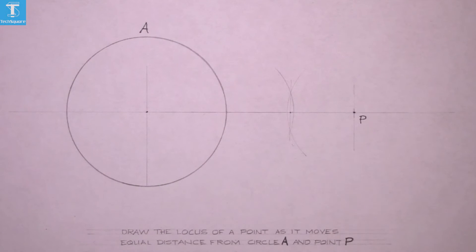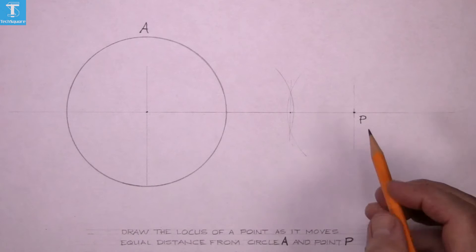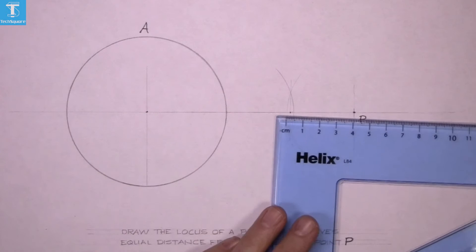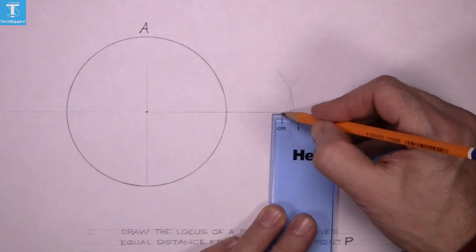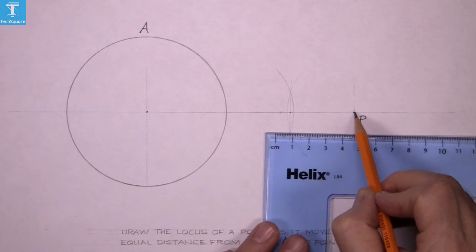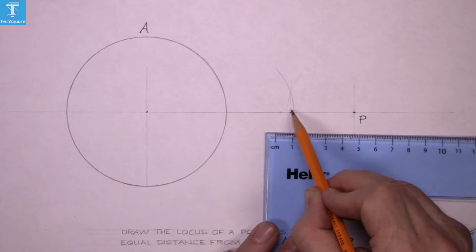So that point there is the same distance from P as it is from circle A. Now if we go five millimeters further from P, so measure five from midpoint away from P and then that five extra.